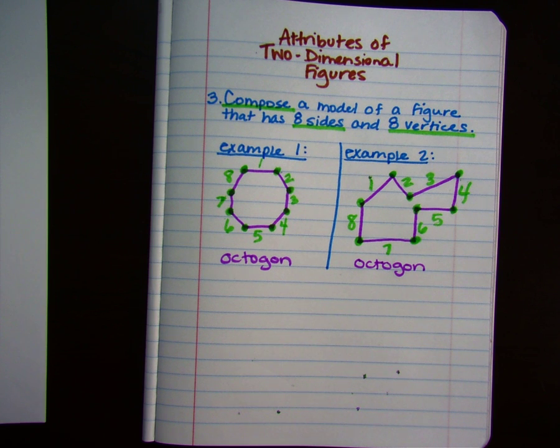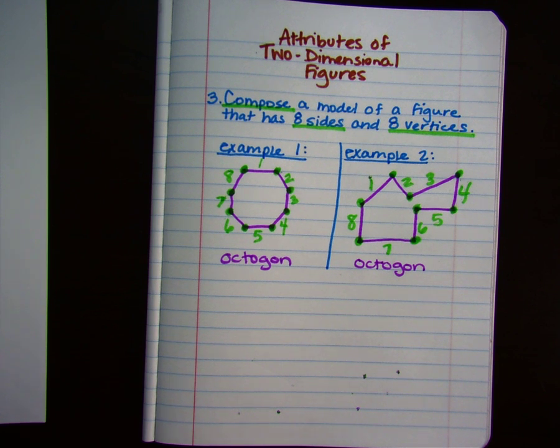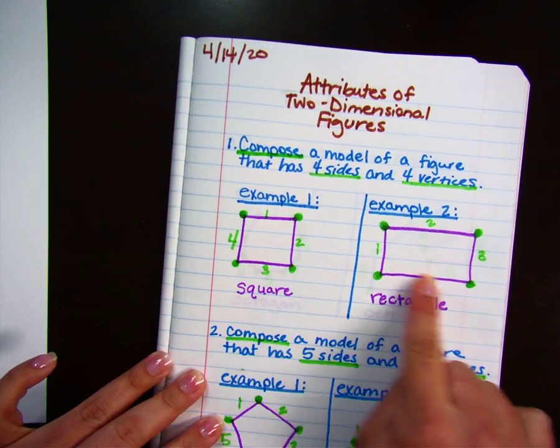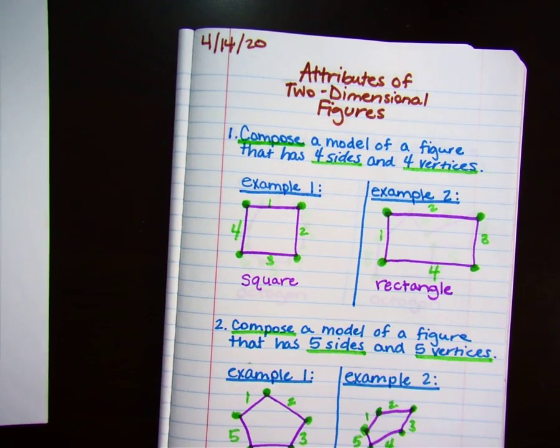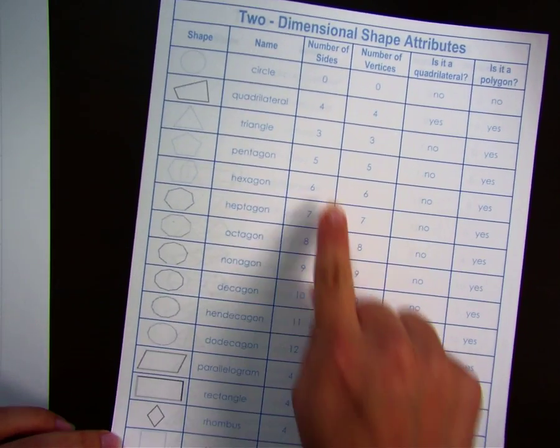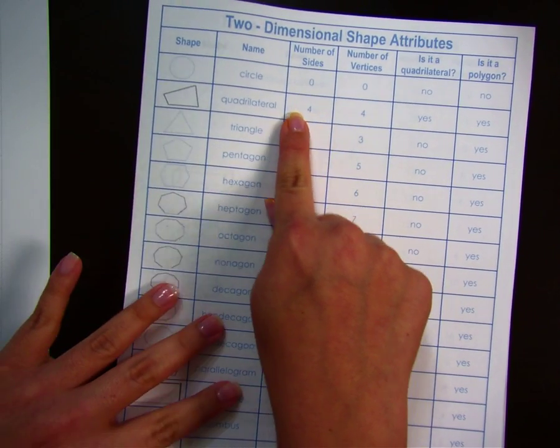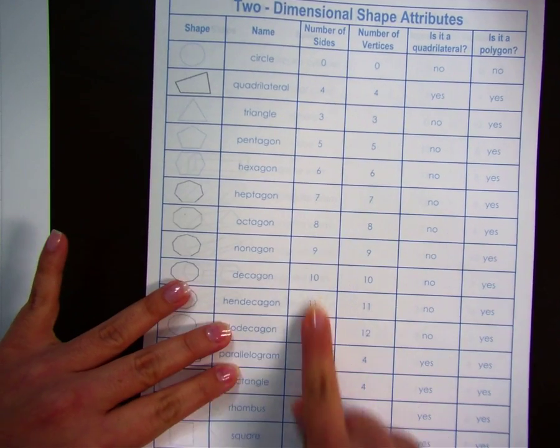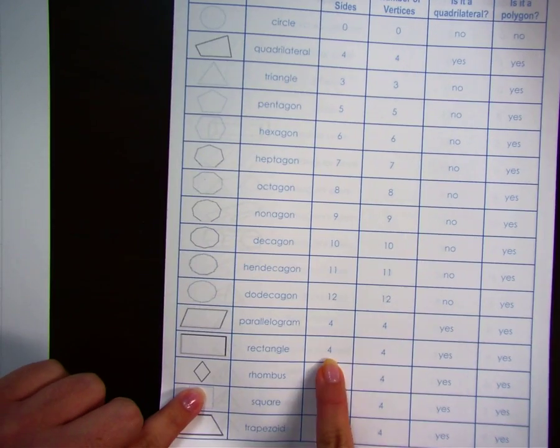Now I would like to talk about number one again for just a second. The second model asked us to draw a figure that had four sides and four vertices. If we look at our cheat sheet, we see that there are several shapes that have four sides and four vertices.